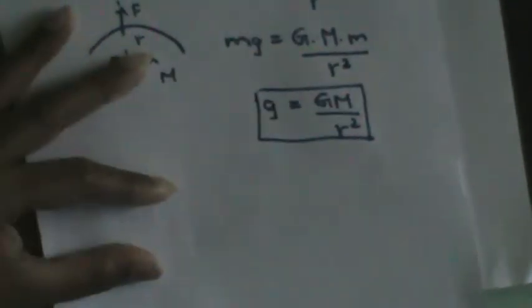Now the force here is actually equal to Mg, so I can equate: Mg equals G times capital M times small m divided by R squared. Since m is not equal to zero, I can cancel one m from both sides. So g is actually equal to GM divided by R squared. This is a very important relationship: g equals GM over R squared.